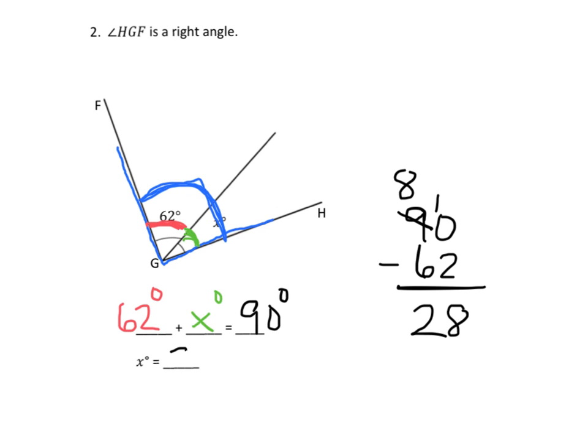Doing some regrouping, we get 28 degrees. So x degrees is 28 degrees—this little angle right here is 28 degrees.